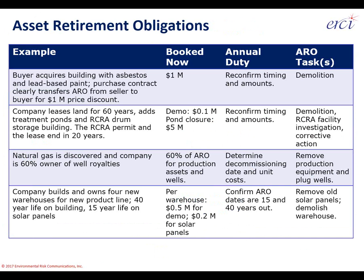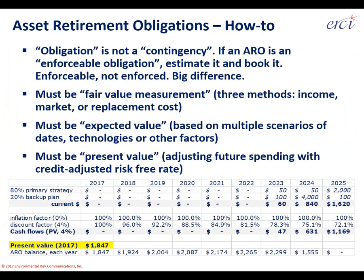Let's cover how the math works, referring back to asset retirement obligation definitions. We call these obligations, not contingencies — a legal subtlety that has evolved over the last 40 years. In 1975 we called these contingencies, but starting in 2001 we began calling them obligations, meaning they are enforceable. Not necessarily being enforced, but enforceable — described in a contract, agreement, oral understanding, or other circumstances spelled out in GAAP. Therefore the liability needs to be booked.